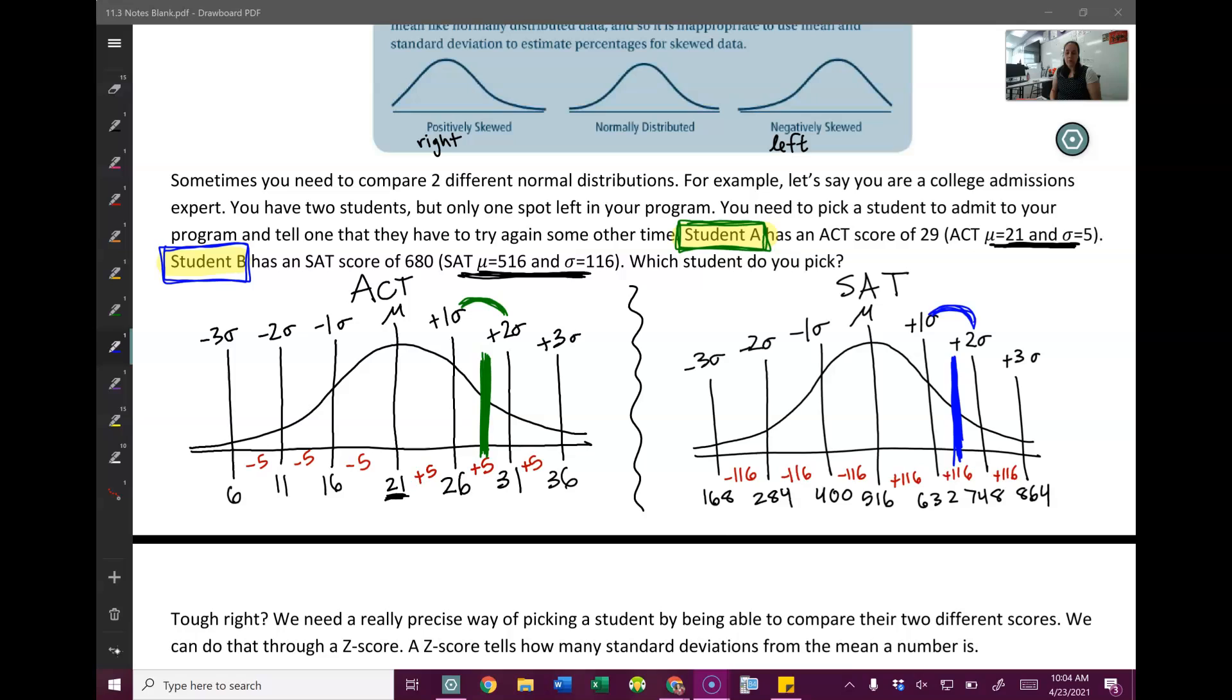Let's check what you got with what I got. So I have my ACT curve. Here's my mean, my standard deviations up and down. And I'm going to call student B the blue, and they got a score of 680, which is going to be about there-ish. So it also looks like it's pretty close to halfway between one and two standard deviations.